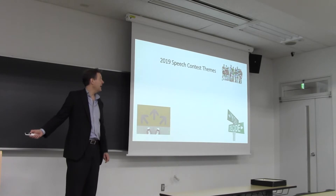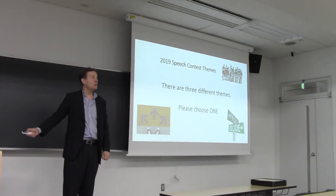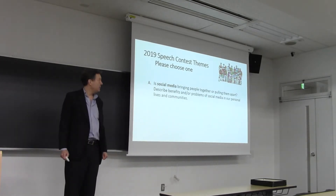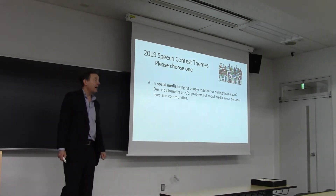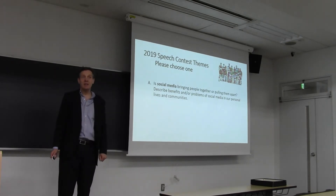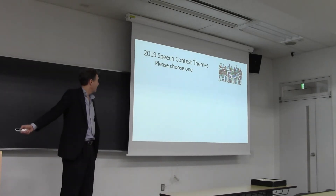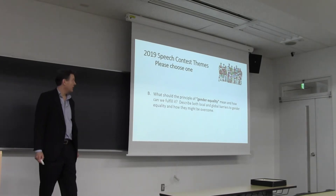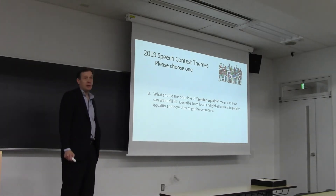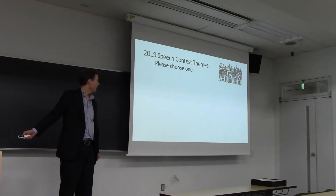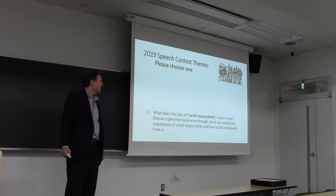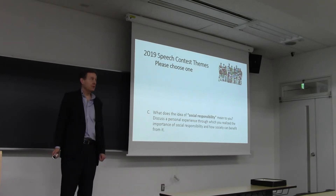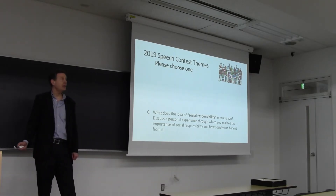Let's talk about this year's contest themes. There are three different themes — please choose one. Topic A: Is social media bringing people together or pulling them apart? Describe benefits and/or problems of social media in our personal lives and communities. Topic B: What should the principle of gender equality mean and how can we fulfill it? Describe both local and global barriers to gender equality and how they might be overcome.